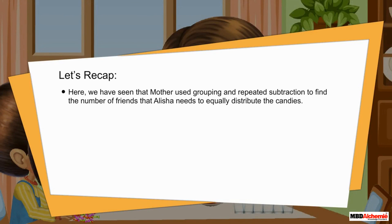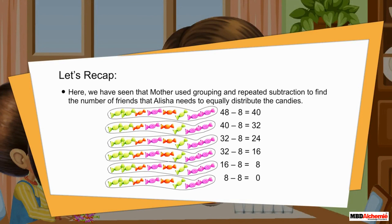Let's recap. Here we have seen that mother used grouping and repeated subtraction to find the number of friends that Alicia needs to equally distribute the candies.